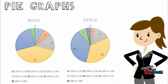To represent the data in a pie graph, we need to use two separate graphs in order for it to be accurate. In the first graph we can see the boys' results, and in the second we can see the girls' results.